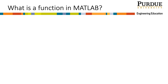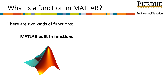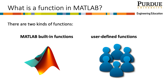Now that we know more about the difference between scripts and functions, let's dig into the different types of functions in MATLAB. There are two major categories: MATLAB built-in functions, such as sign, sum, and pi, which are embedded in the MATLAB interface and can be called from the command window or within scripts or functions you create. Functions created by the user are called user-defined functions, which must be saved in your current directory in order to execute when called.